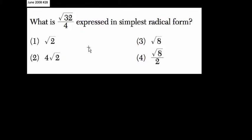So here we have the square root of 32 over 4, and we're writing it in simplest radical form. Now, we can't just do 32 divided by 4 and get the square root of 8. That one's out.